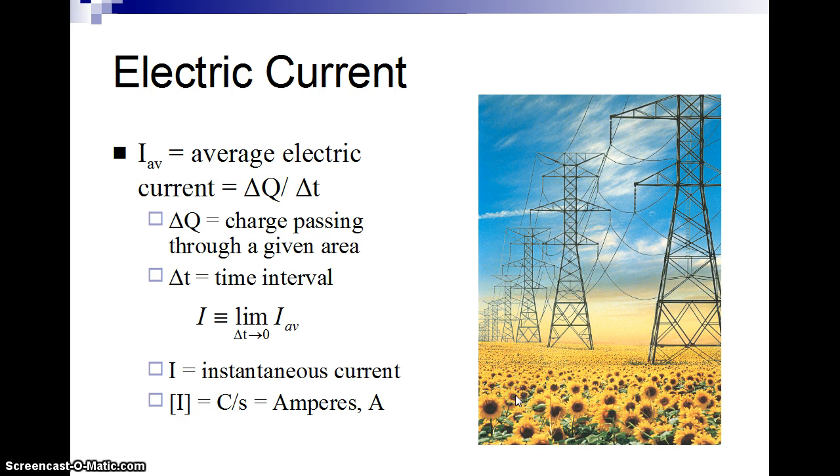And the units of that are coulombs per second, which we're going to call amperes, named for a French scientist named Ampere. And the symbol for that is A. It usually gets shortened down to say this many amps of current instead of amperes.